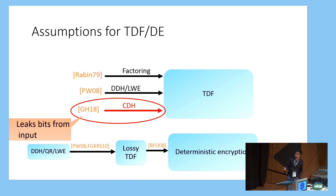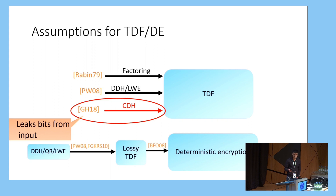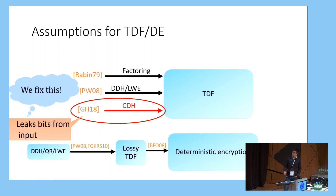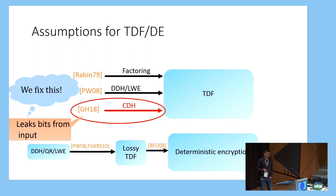Moreover, the CDH-based TDF from last year has this drawback that it leaks bits from the input, so it cannot be deterministic encryption secure. As one of the contributions of our paper, we show how to fix this problem to build deterministic encryption from CDH without having to go through lossy trapdoor functions, which is a primitive that we don't know how to build from CDH.